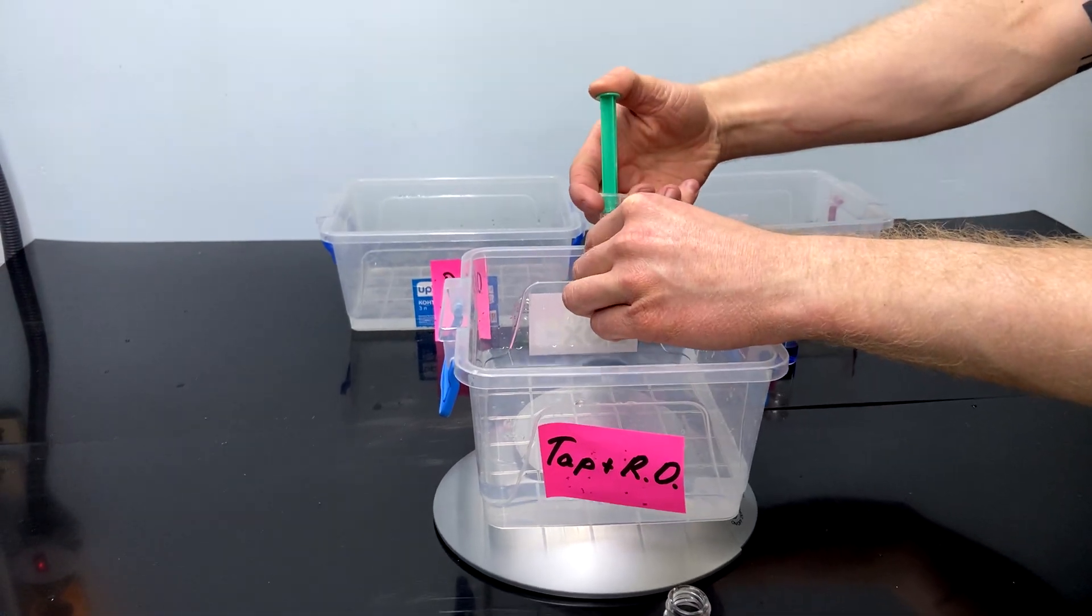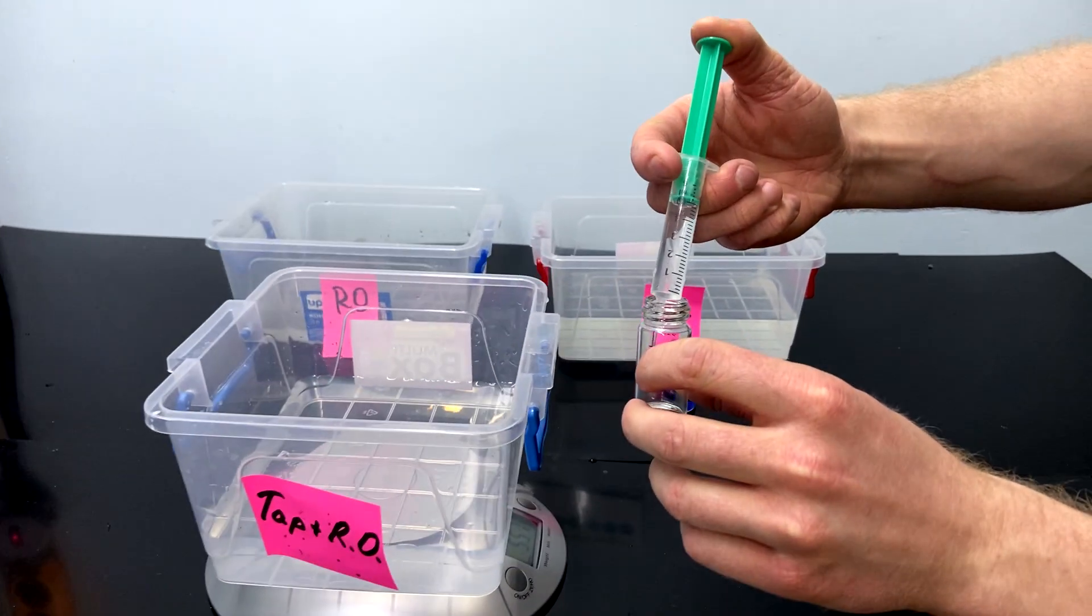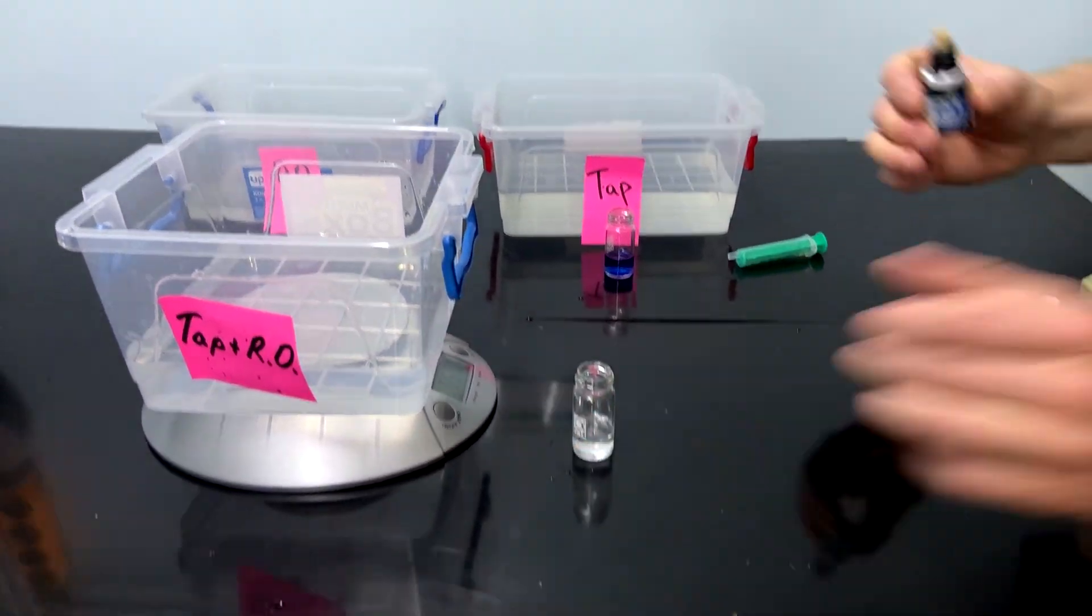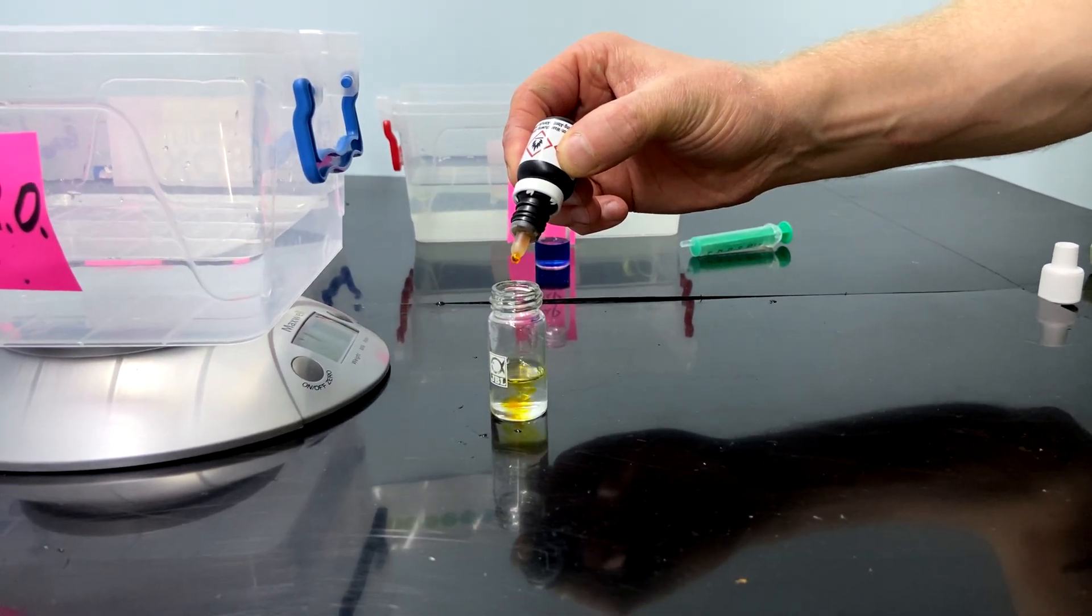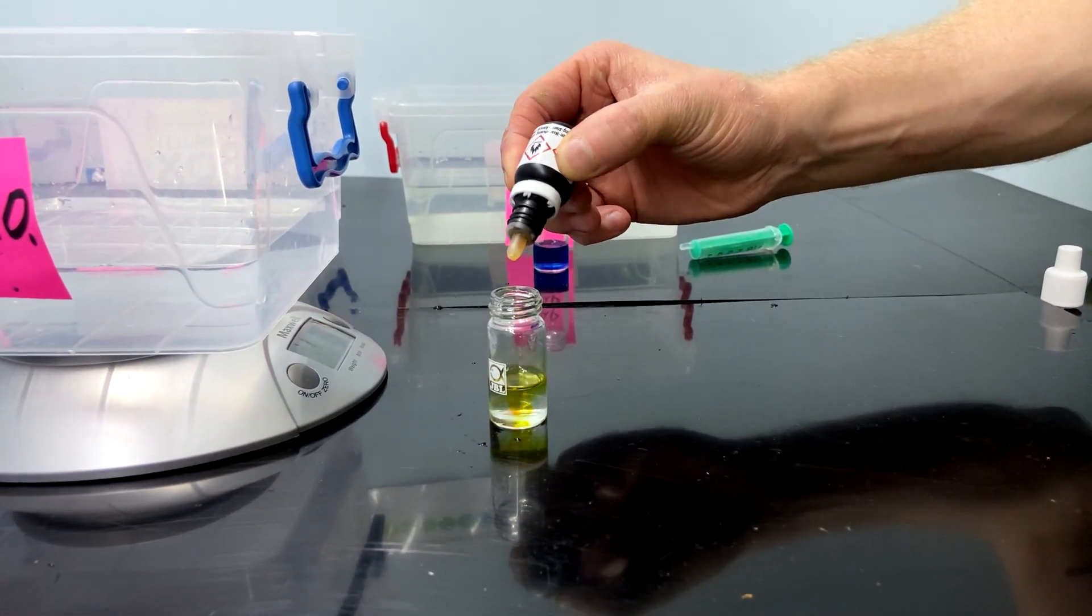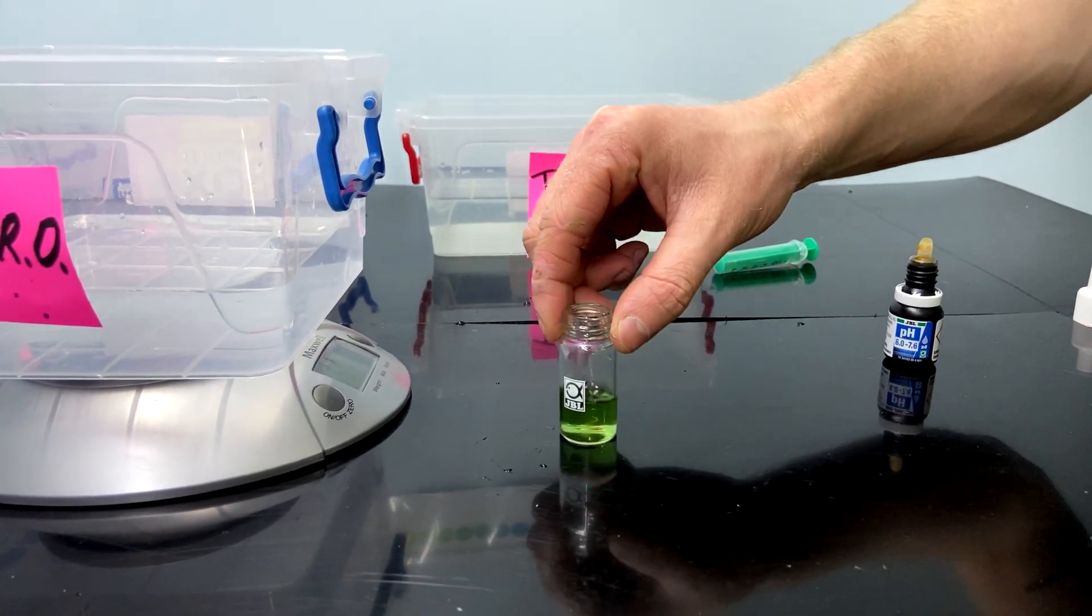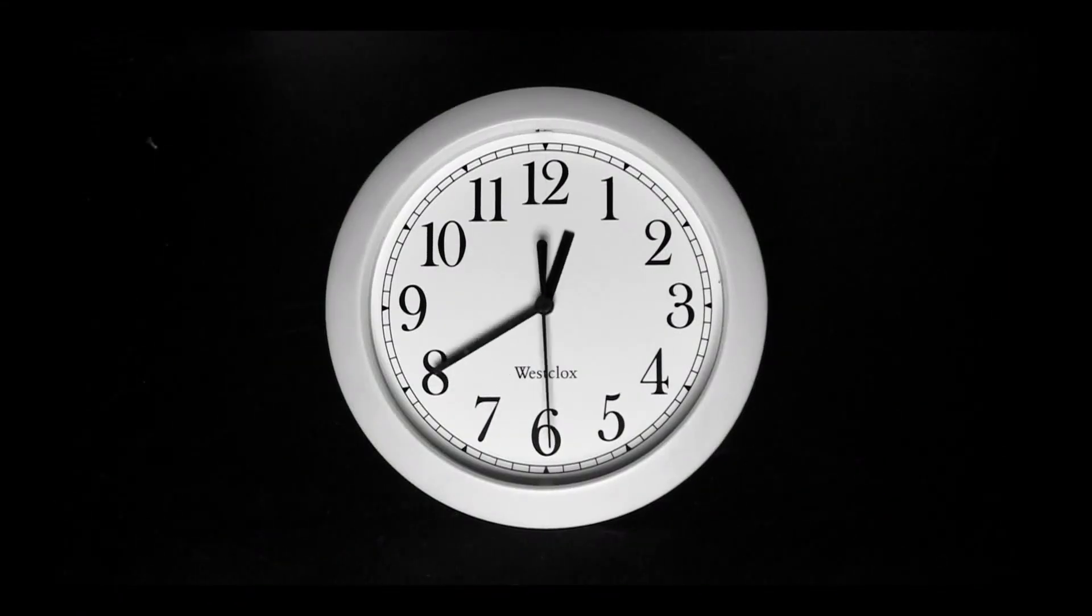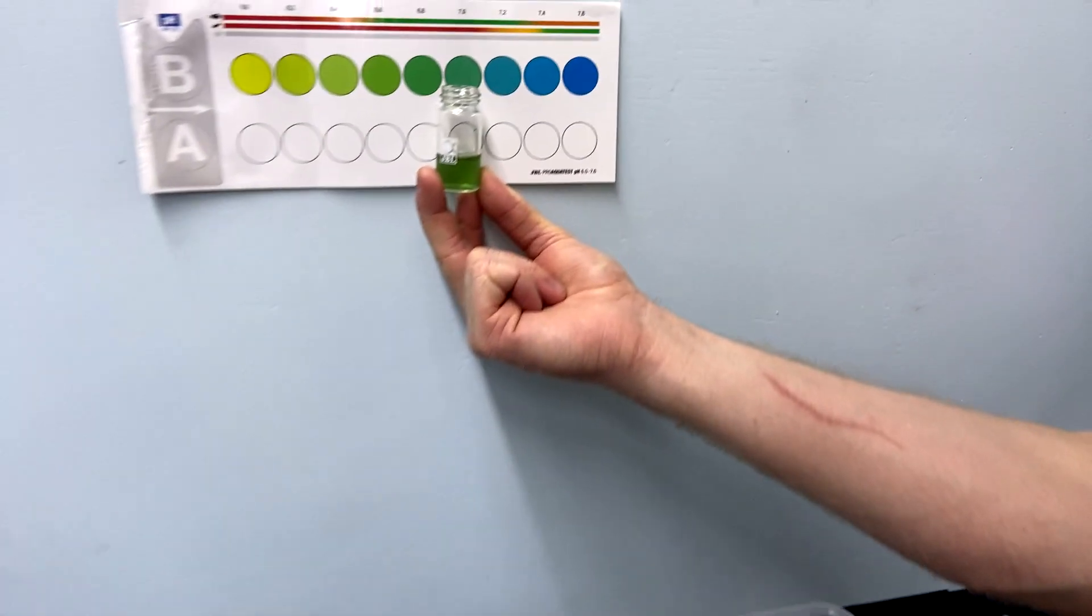We should add 5 milliliters of water and add 4 drops of indicator liquid. We should mix a bit and wait for 10 minutes.